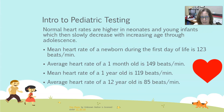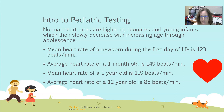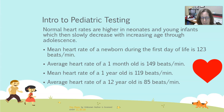When you look at heart rate, the normal heart rate is higher in neonates and young infants, then it slowly decreases with increasing age through adolescence. For example, the mean heart rate of a newborn during the first day of life is 123 beats per minute, but the average heart rate of a one-month-old is 149 beats per minute. The mean heart rate of a one-year-old is 119 beats per minute and the average heart rate of a 12-year-old is 85 beats per minute.